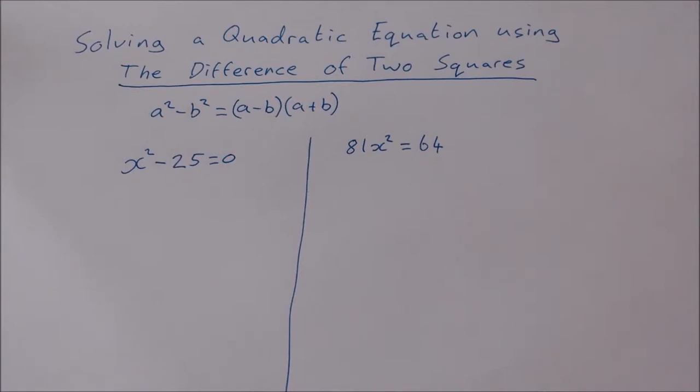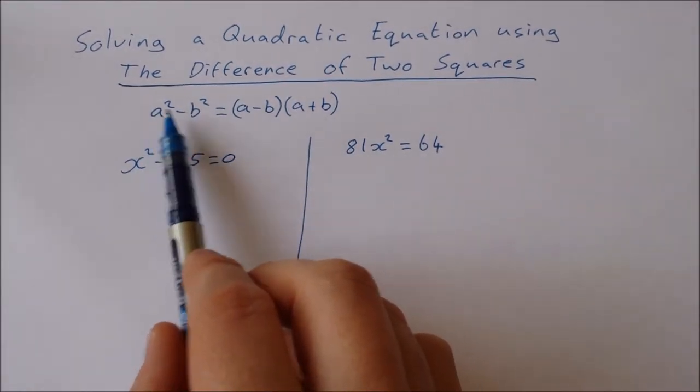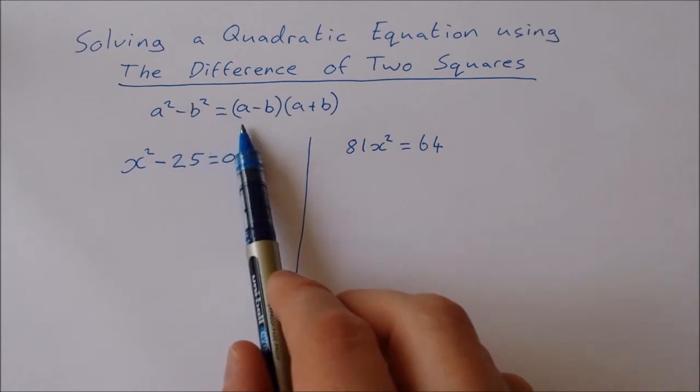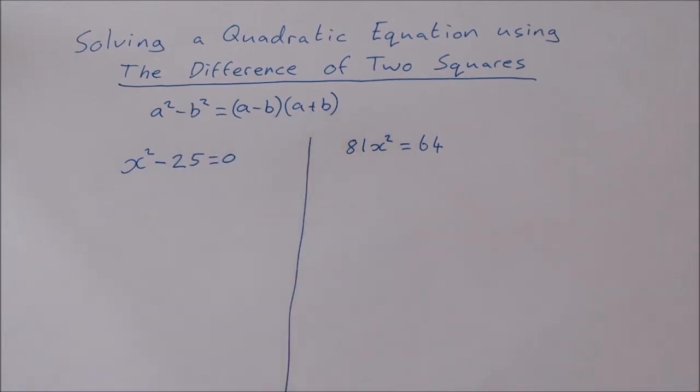Okay, so just a quick reminder of what the difference of two squares is. We have a² minus b² is equal to (a-b) times (a+b).